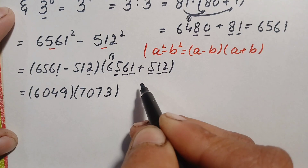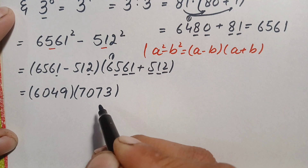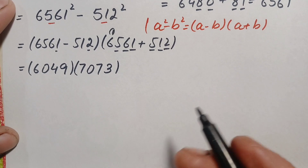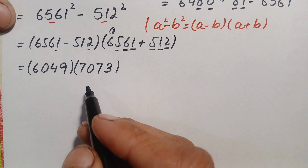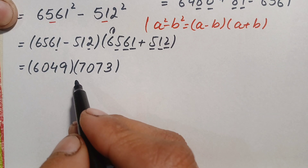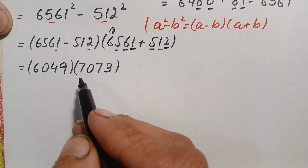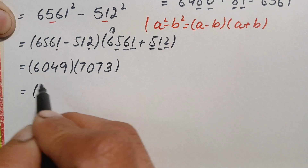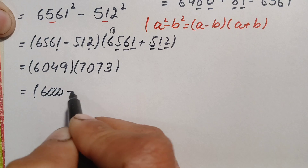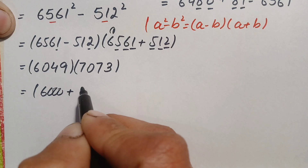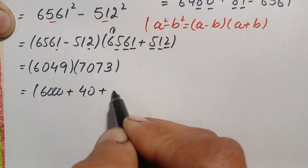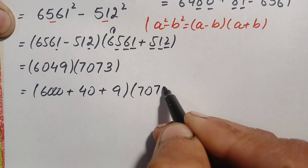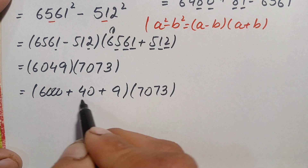Now we will multiply these two numbers without using any calculator and without any rough work or standard multiplication. We will change one number to its place value form and multiply the second number with each part. We change 6049 into the sum of place values of each digit: 6000 plus 0 plus 40 plus 9, multiplied by 7073.